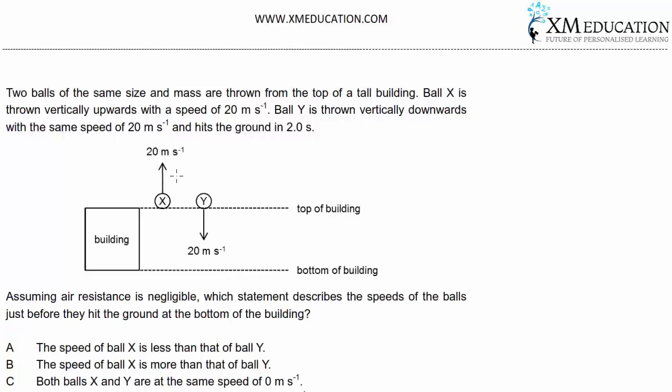A ball is thrown vertically upwards at 20 meters per second. A ball is thrown vertically downwards at 20 meters per second. They ask which statement is correct.